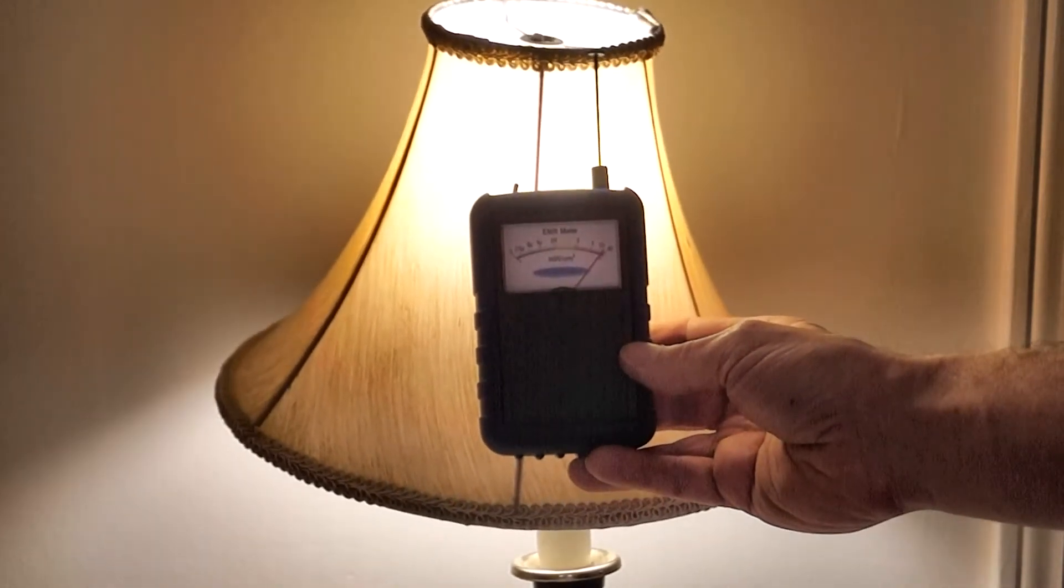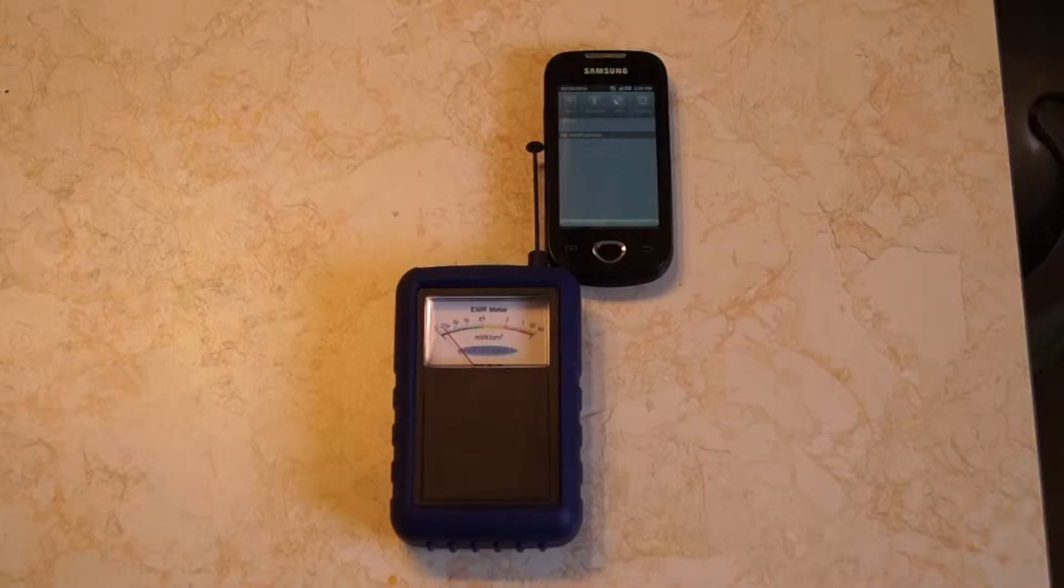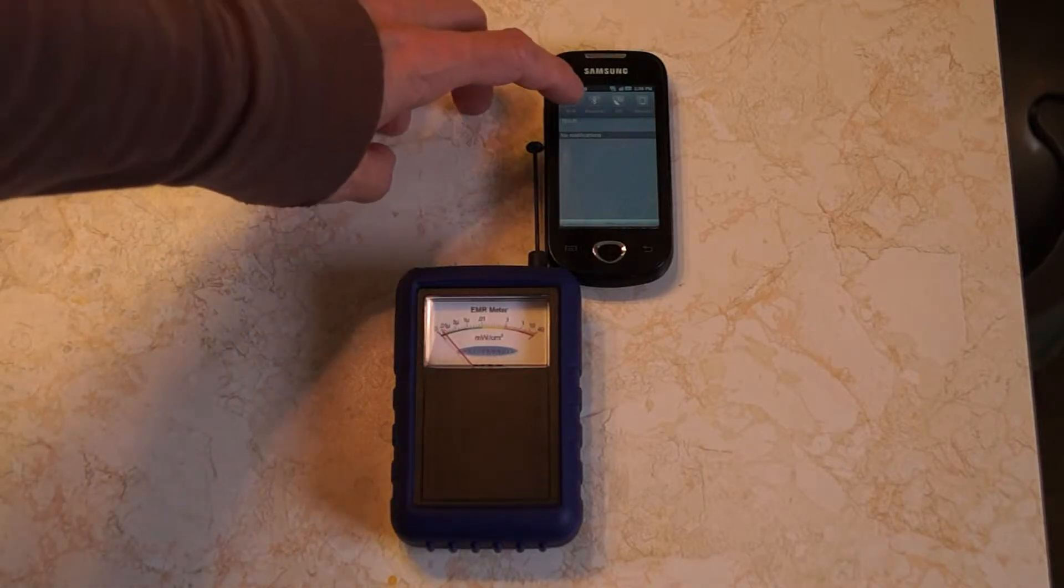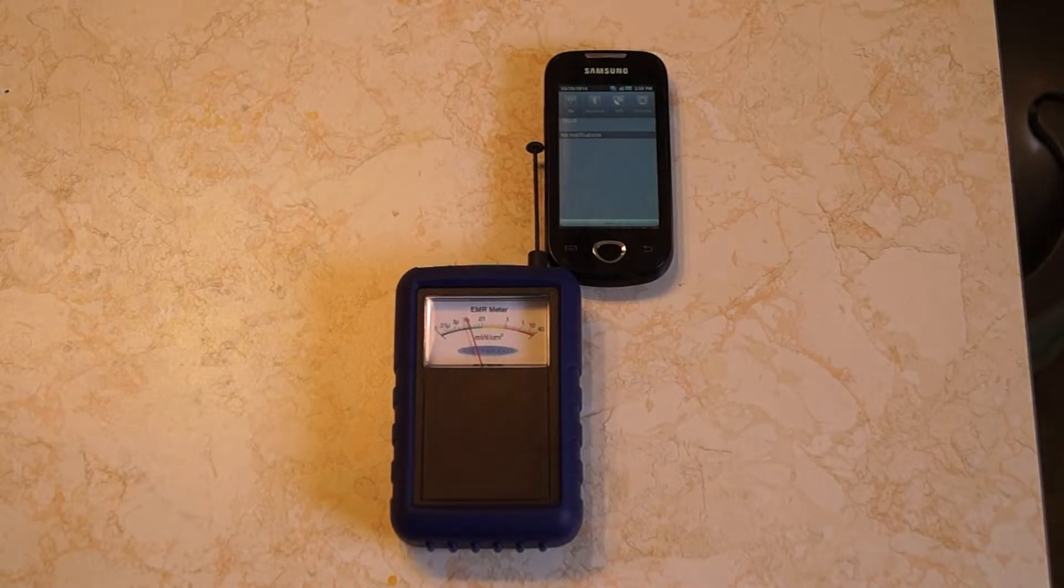This is a Samsung Android cell phone that has Wi-Fi capability. And we're now going to turn on the Wi-Fi. And we'll see that it pulses communication between 1 microwatt per square centimeter and occasionally up to 0.01 milliwatts per square centimeter.